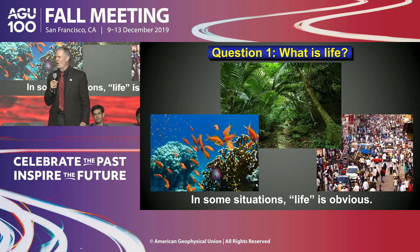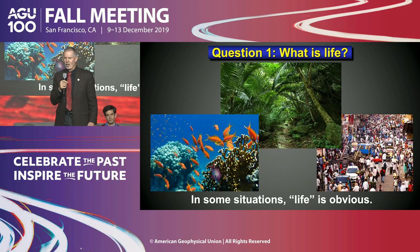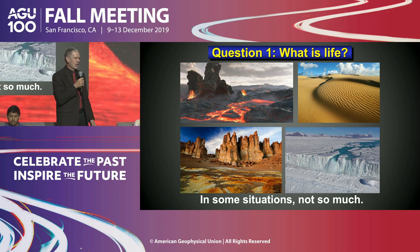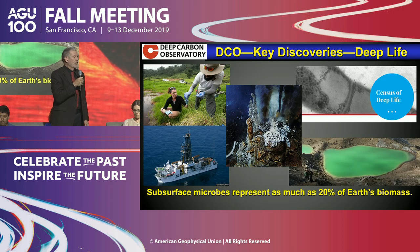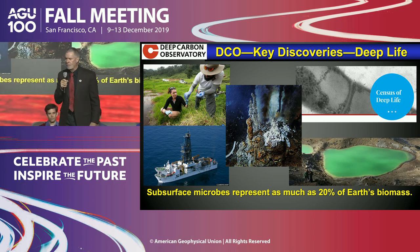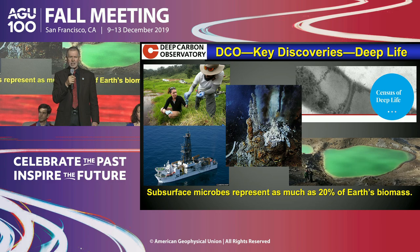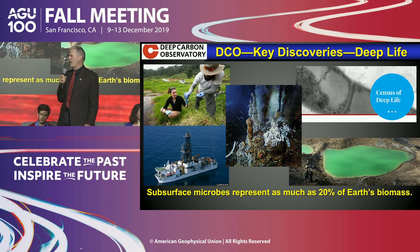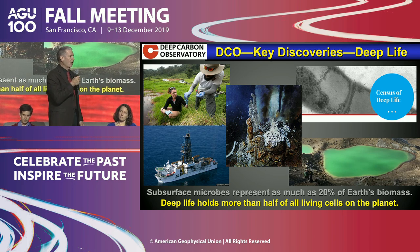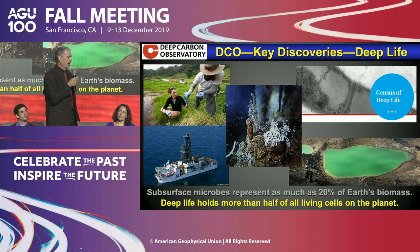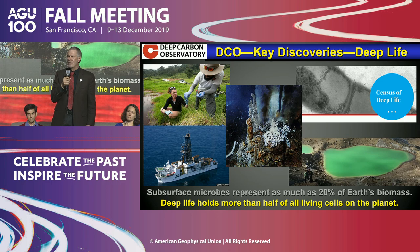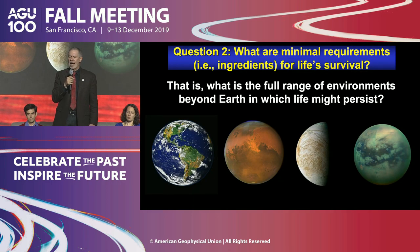What is life? Sometimes we know it when we see it — it's really obvious. Other times, at least in the surface world, we have microbial ecosystems that aren't quite so obvious, but we can certainly study them. I've been involved in the Deep Carbon Observatory for the last ten years, doing a census of deep microbial life. It's amazing that about 20% of Earth's biomass could be underground, and more than half of all living cells on Earth are beneath the sunlit surface. That really changes our perspective of what we mean by life and habitability.